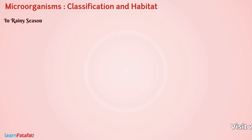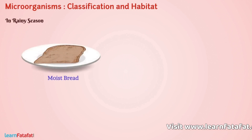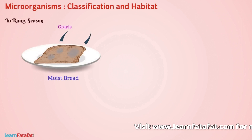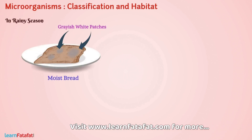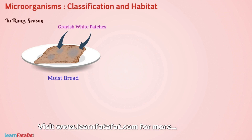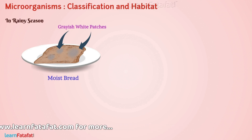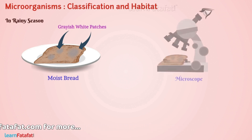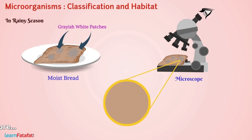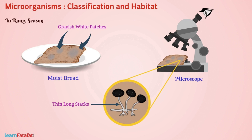During rainy season, moist bread gets covered with greyish white patches. If we observe these patches through a microscope, we will find tiny black rounded structures growing on thin long stalks from the bread. These microorganisms are called bread mold.